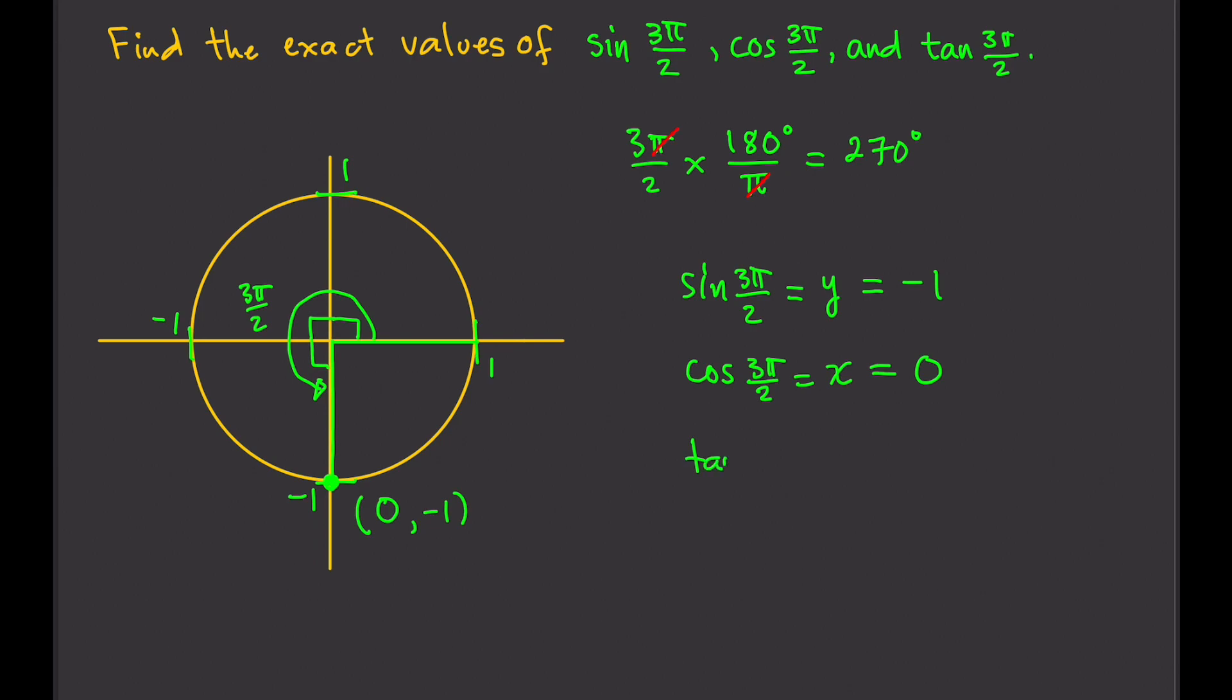Tangent of 3π/2 equals y over x. Well, y is negative 1, x is 0, so that gives us undefined. And that's it. That's all we needed to do. Sine of 3π/2 is negative 1, cosine of 3π/2 is 0, tangent of 3π/2 is undefined.